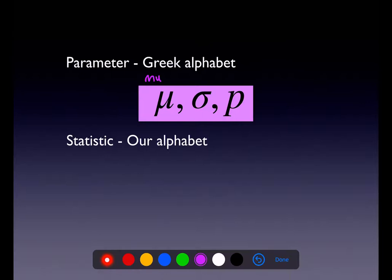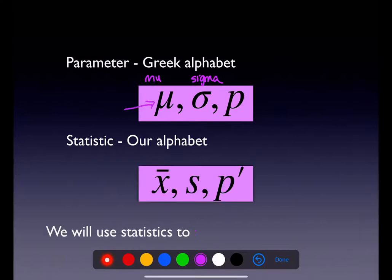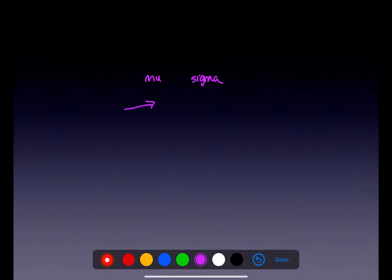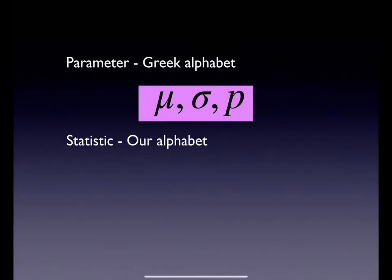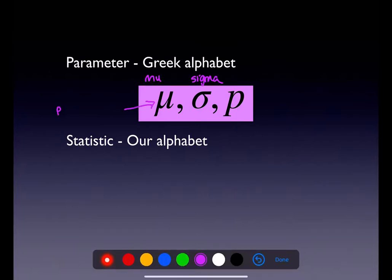Parameters — we typically use the Greek alphabet to denote them. The Greek letter mu and sigma. Mu here stands for the population mean, and sigma stands for the population standard deviation.